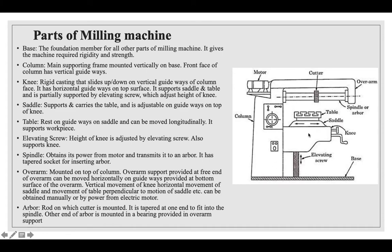The milling machine has several main parts. The base is the foundation member for all parts, giving the machine rigidity and strength. The column is the main supporting frame mounted vertically on the base; its front face has vertical guideways. The knee is a rigid casting that slides up and down on the vertical guideways of the column and has horizontal guideways on its top surface; it supports the saddle and table and is partially supported by an elevating screw that adjusts its height. The saddle supports and carries the table and is adjustable on guideways on top of the knee. The table rests on guideways on the saddle and can be moved longitudinally to support the workpiece.